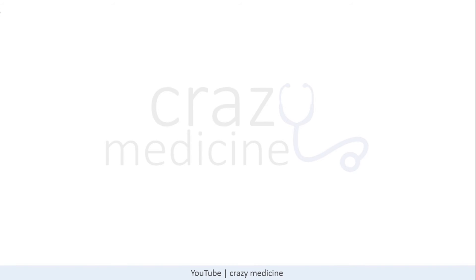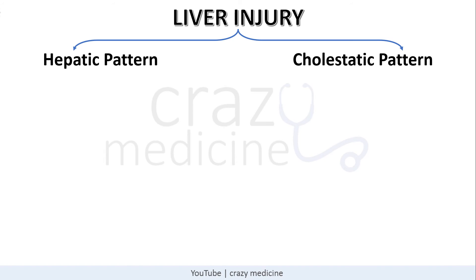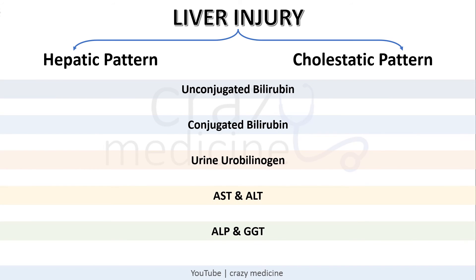Now we will see how to apply this knowledge practically. Liver injury can follow a hepatic pattern or a cholestatic pattern. Conjugated (direct) bilirubin is increased in both types of liver injury. However, unconjugated bilirubin is normal in the cholestatic pattern because obstruction to bile flow occurs after conjugation, so only conjugated bilirubin is elevated. Urine urobilinogen is absent or greatly reduced in cholestatic or obstructive jaundice.